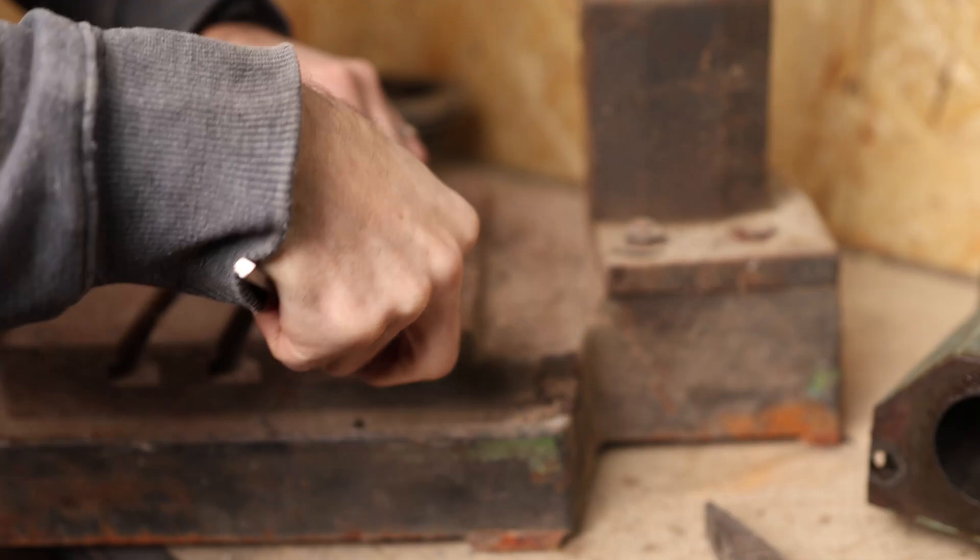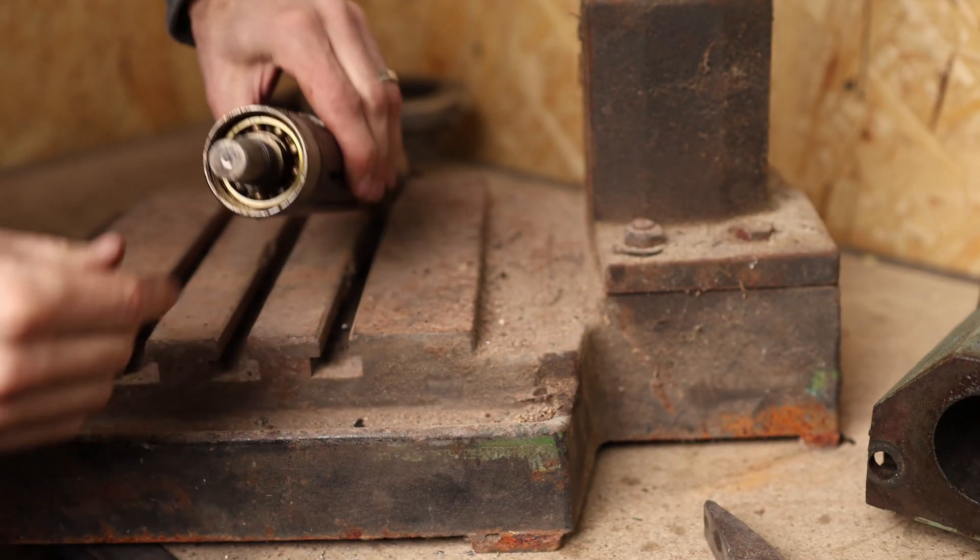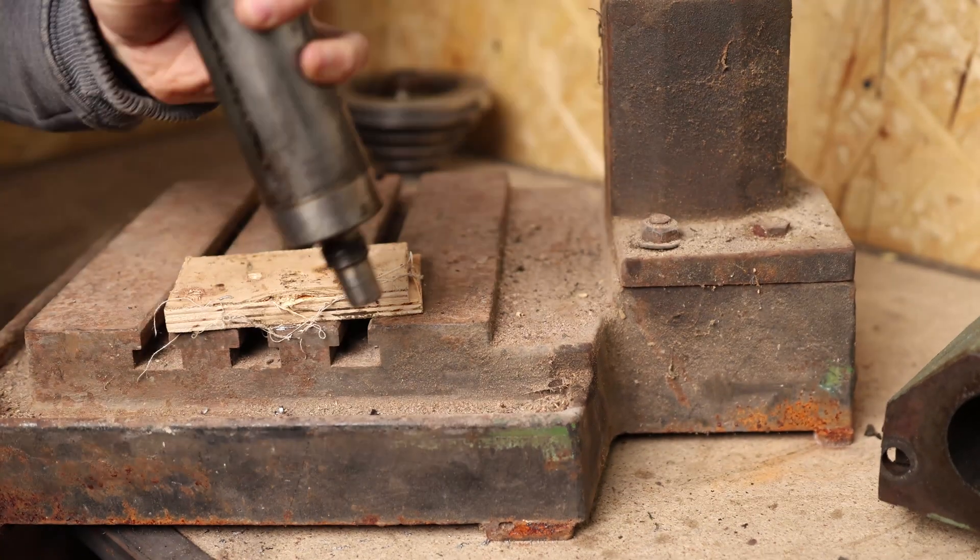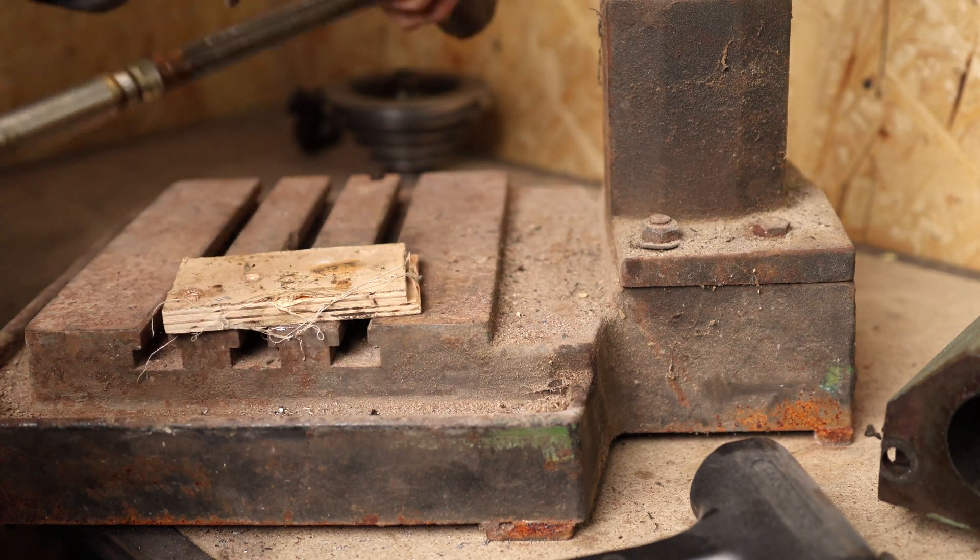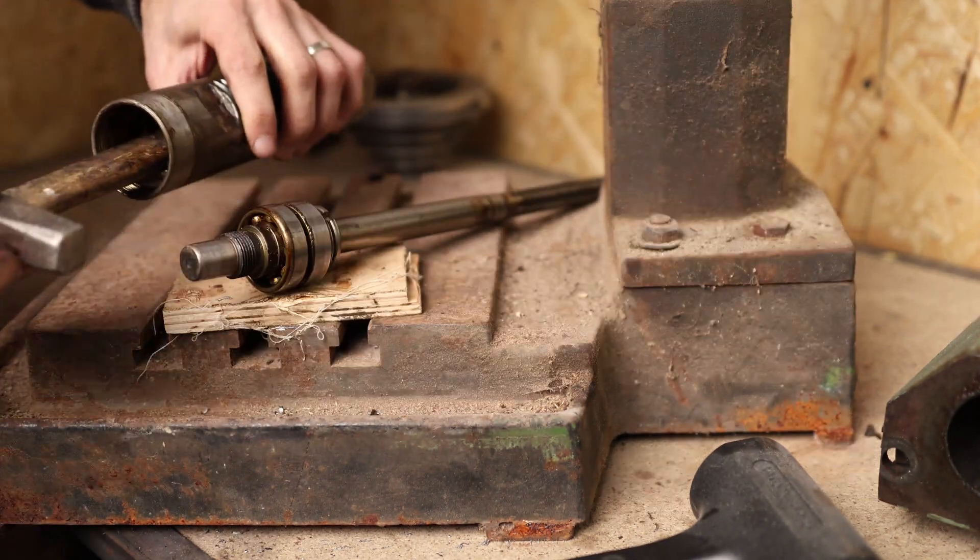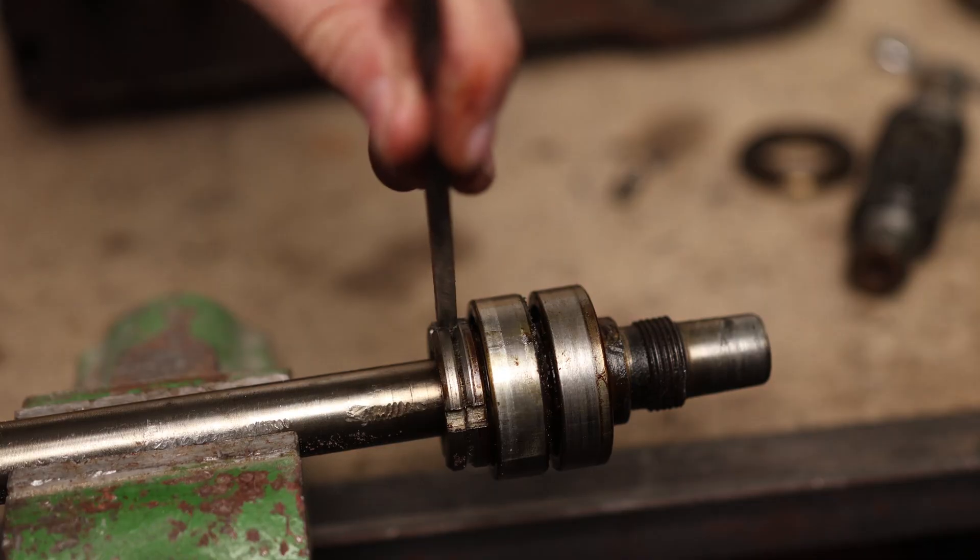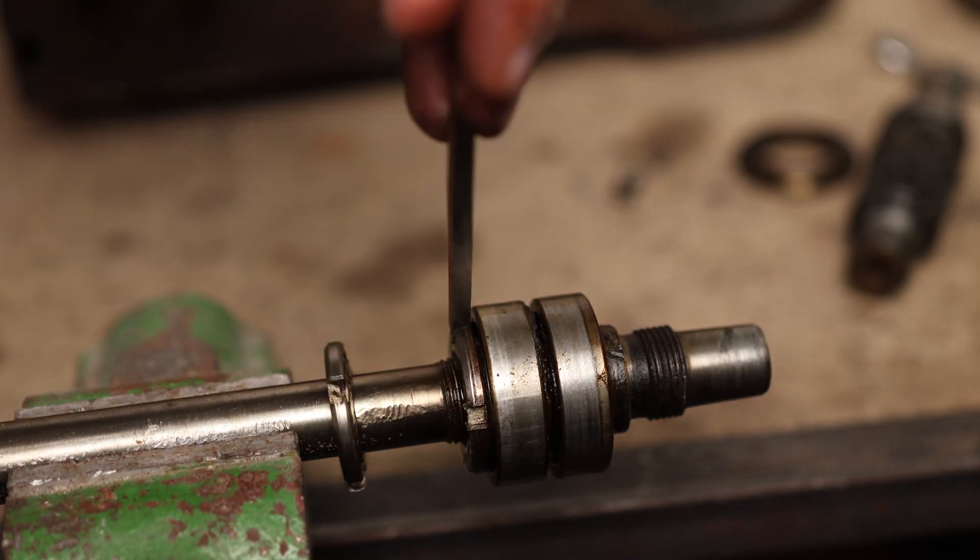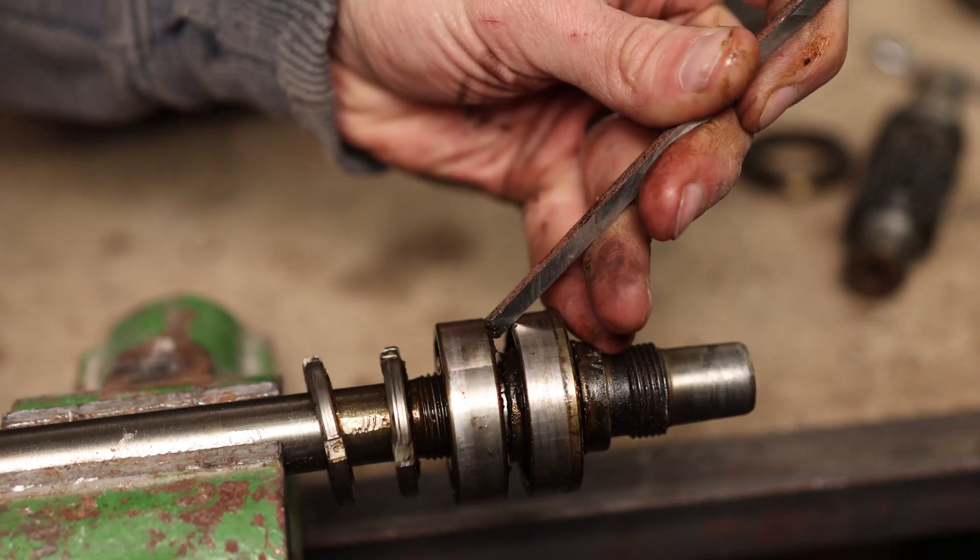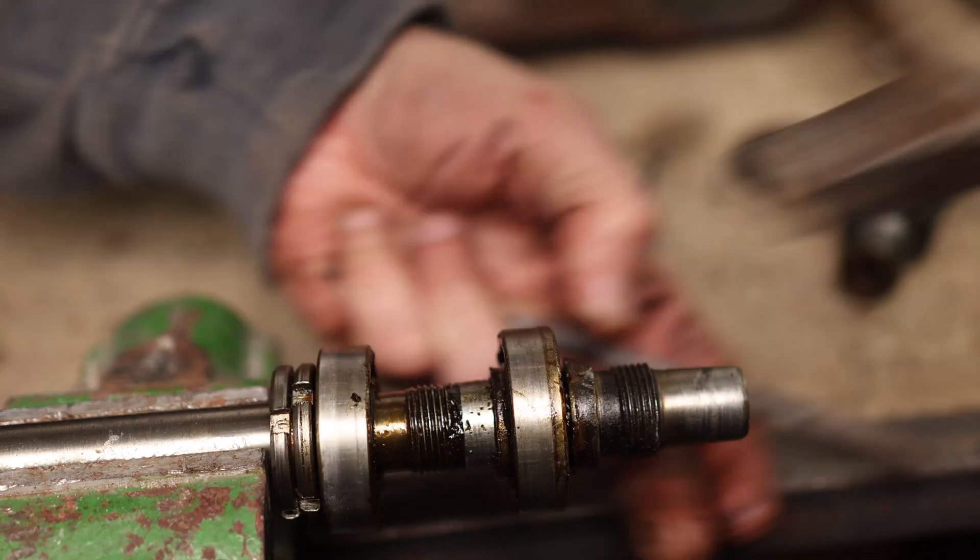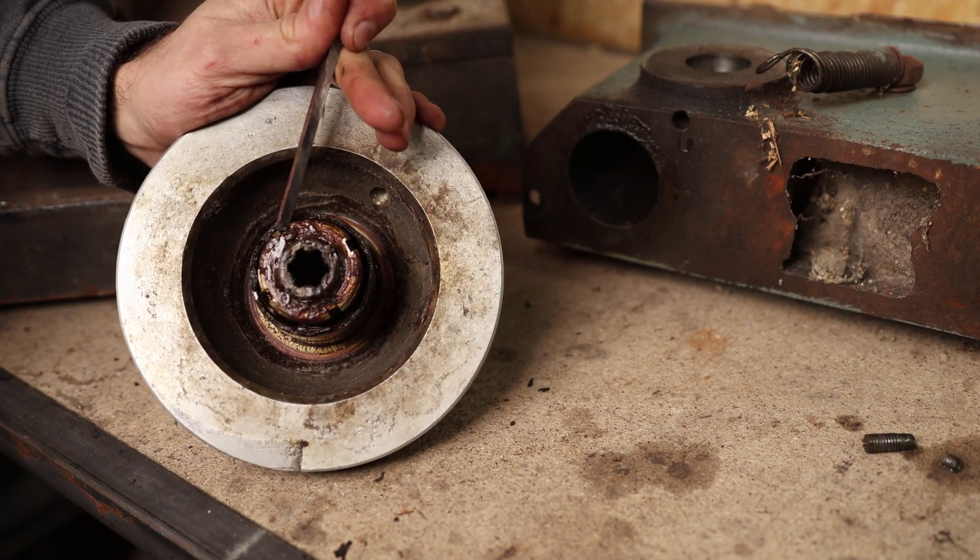After unscrewing the lock nut I am removing spindle from the quill using a hammer. I put the spindle in the vice and remove these bearings as well. Based on the markings I can tell these bearings were changed in the same way in the past. And lastly I removed the bearings from the pulley.